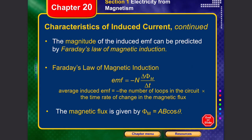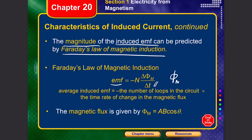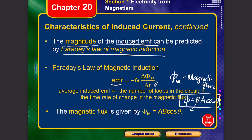The magnitude of an induced EMF can be predicted using Faraday's law of magnetic induction, which states that the EMF is proportional to the rate of change of the magnetic flux. Magnetic flux, denoted phi-m, is the number of field lines passing through a given area, written as phi-m equals B times A times cosine theta.